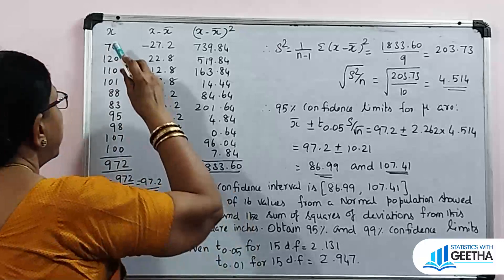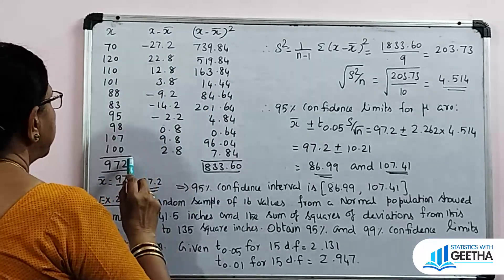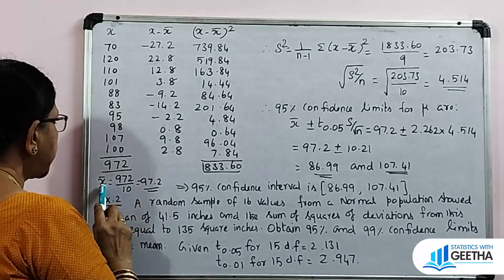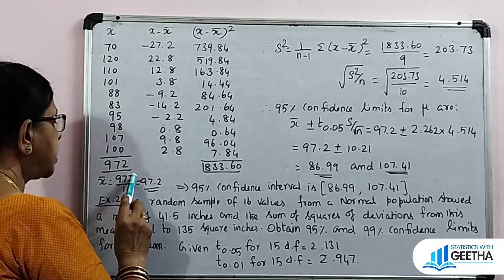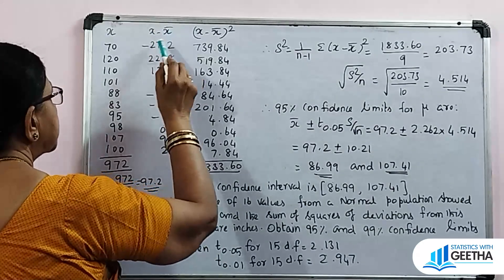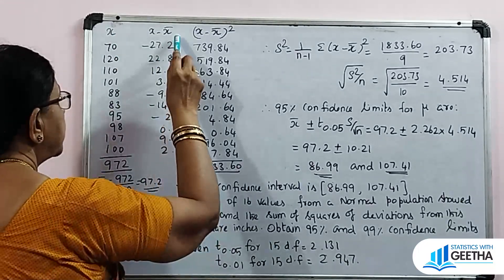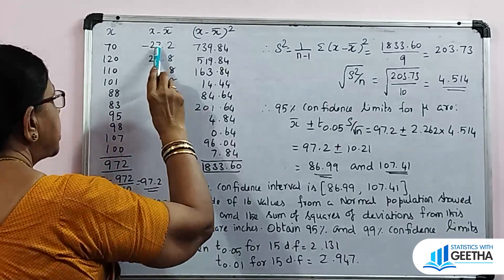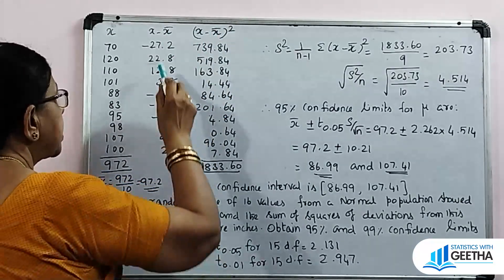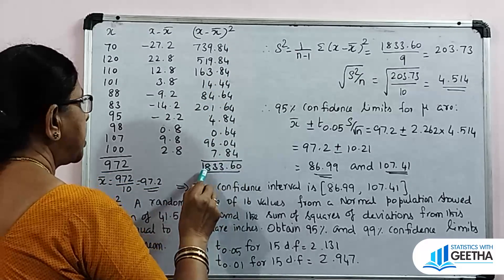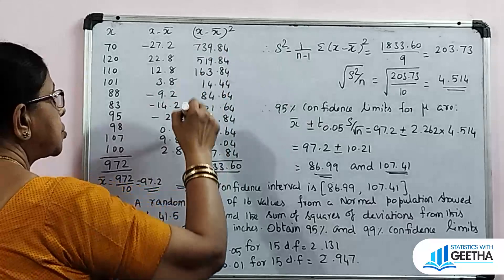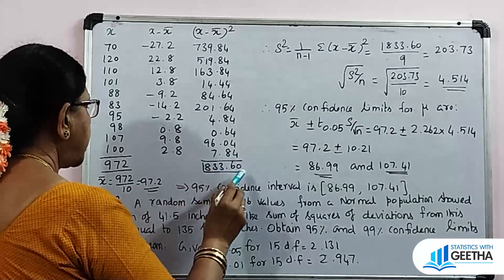We find X̄ equal to summation X by n, which is 972 divided by 10, giving X̄ equal to 97.2. In the second column, we compute X minus X̄, and in the third column, (X minus X̄)². The summation of (X minus X̄)² is 1833.60, which is the sum of squared deviations from the mean.